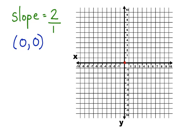Now our slope is positive 2 over 1. Here is the graph of our line.